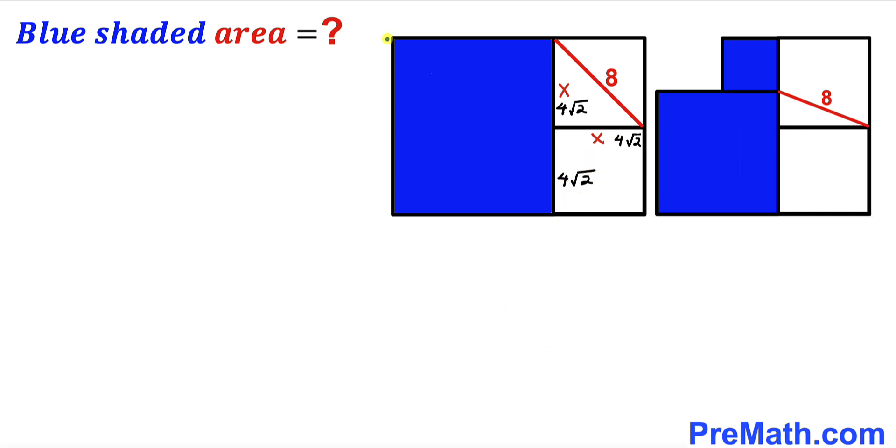Therefore, the side length of this big blue square is the sum of these two individual lengths. 4√2 + 4√2 = 8√2. So all these side lengths are 8√2 as well.